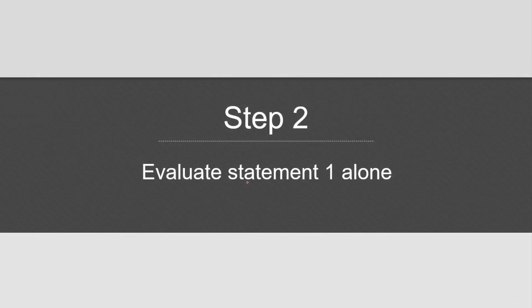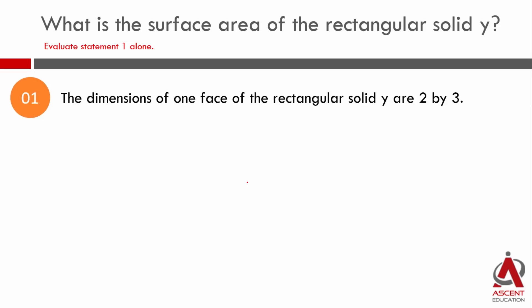Let's evaluate statement 1 alone. Statement 1 says the dimensions of one face is 2 by 3. So one rectangular solid face is 2 by 3, we will mark it. This is how the rectangular solid is going to look. Here we know there are 2 dimensions, here we know there are 2 dimensions, here we know there are 3 dimensions. What we do not know is the third dimension. Without the third dimension, we will not be able to find out the surface area.